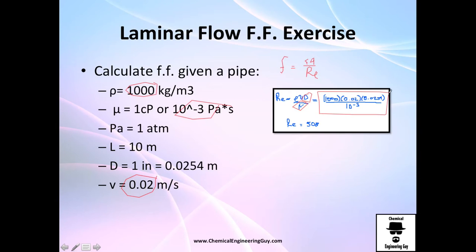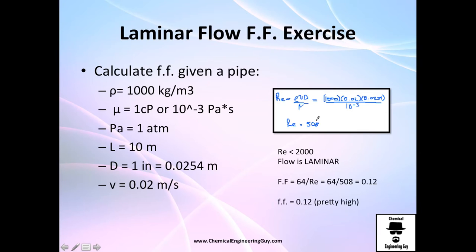So let me calculate this number right here and I got 508. Since it is below the 2000 limit, the flow is laminar, so we can actually say that we can use this equation right here. So 64 divided by 508, you got this value.